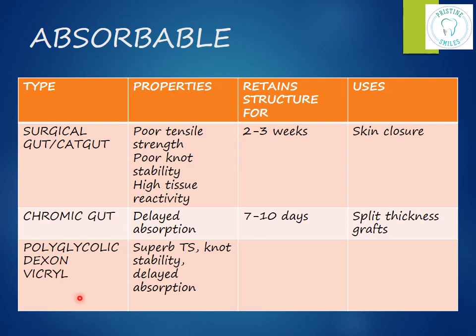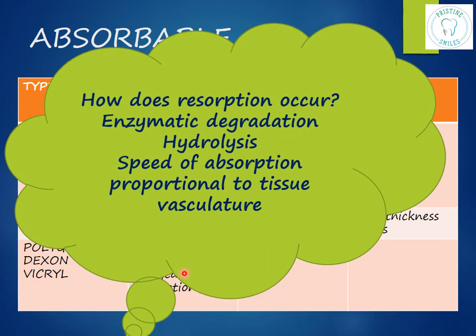Synthetic absorbable sutures are preferred because they reduce tissue reactions and have predictable absorption. The first is polyglycolic acid — dexon or vicryl. Dexon is a polymer of glycolic acid; it may be uncoated, violet, or undyed. Vicryl may also be violet or undyed and is stronger than dexon. Both have superb tensile strength, very good knot strength, and delayed absorption. Resorption occurs via enzymatic degradation or hydrolysis, and the speed of absorption is directly proportional to the vascularity of the supporting tissues.